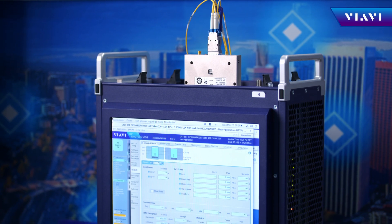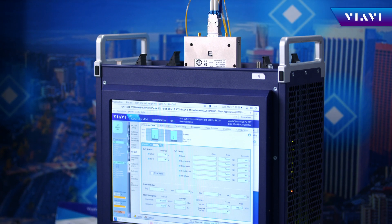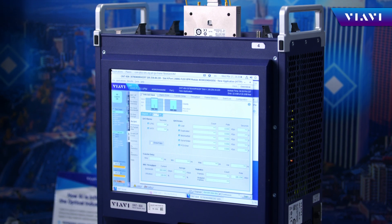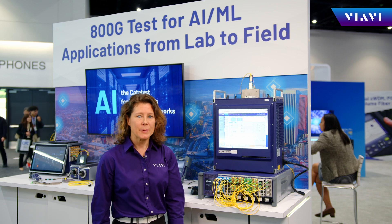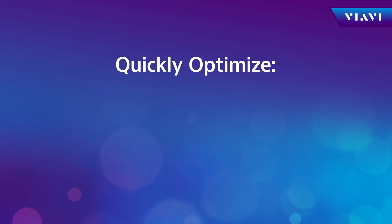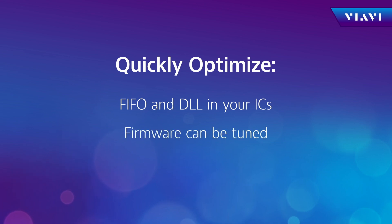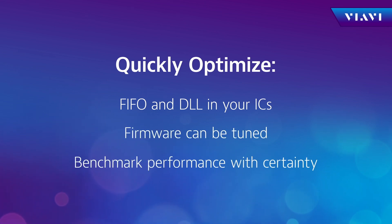The true impact of these effects can only be quantified when using the combination of our in-depth VIAVI ONT dynamic skew application and our nanosecond precision latency application. By adding variation in the lane-to-lane skew, you can really stress your product and check what effect that has on latency. With such visibility, you can quickly optimize FIFO and DLL in your ICs, your firmware can be tuned, and the required performance of your product can be benchmarked with certainty.